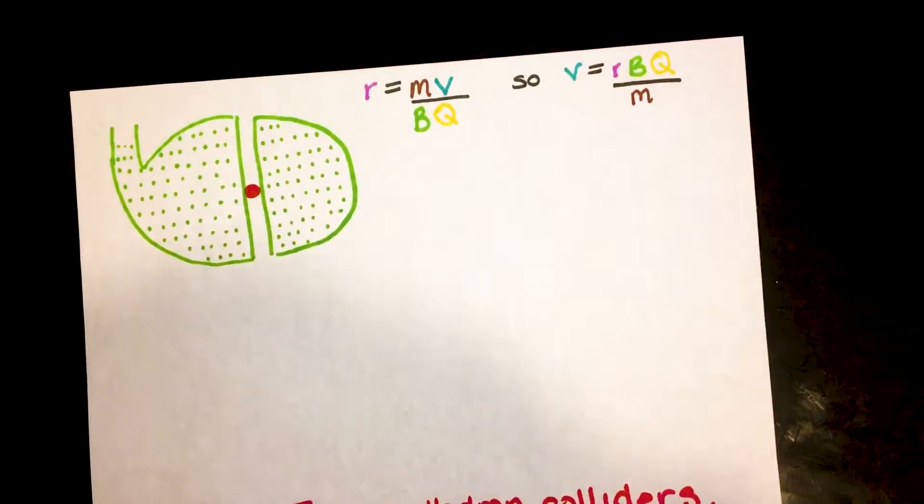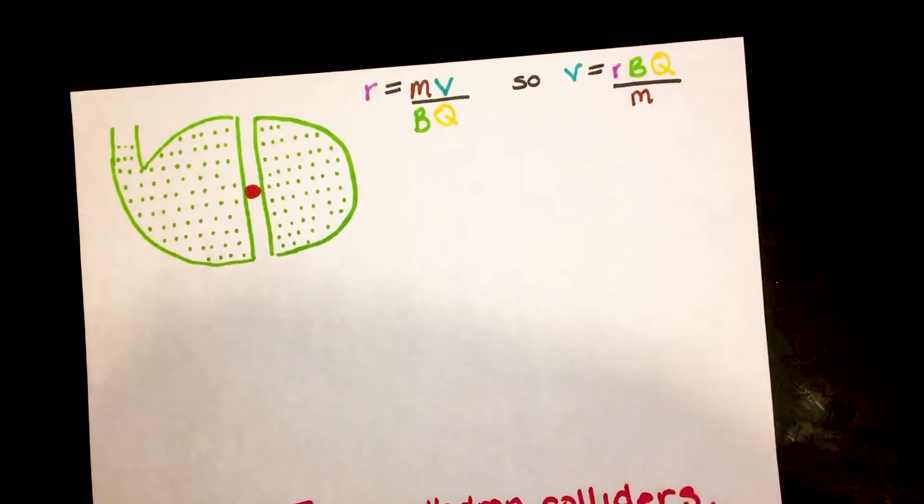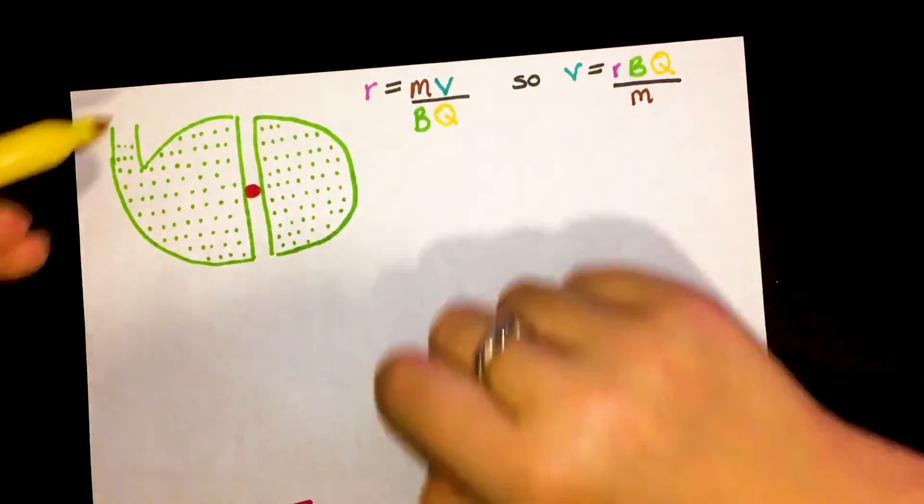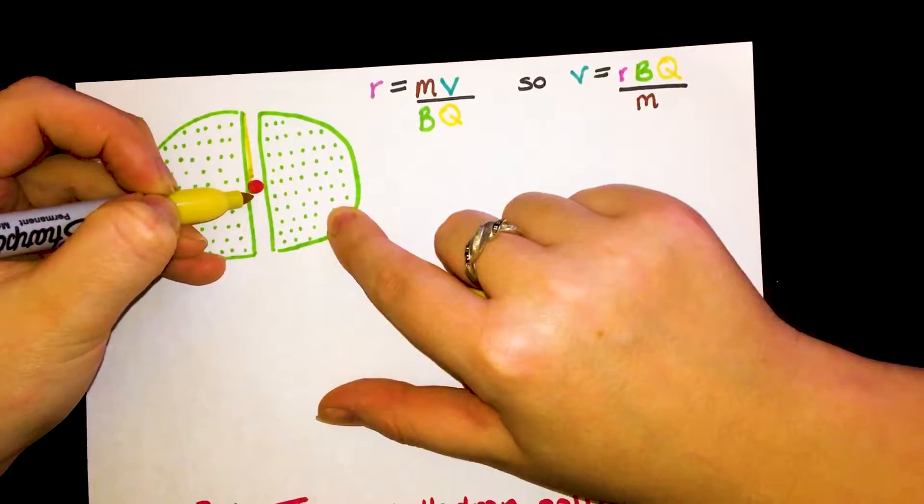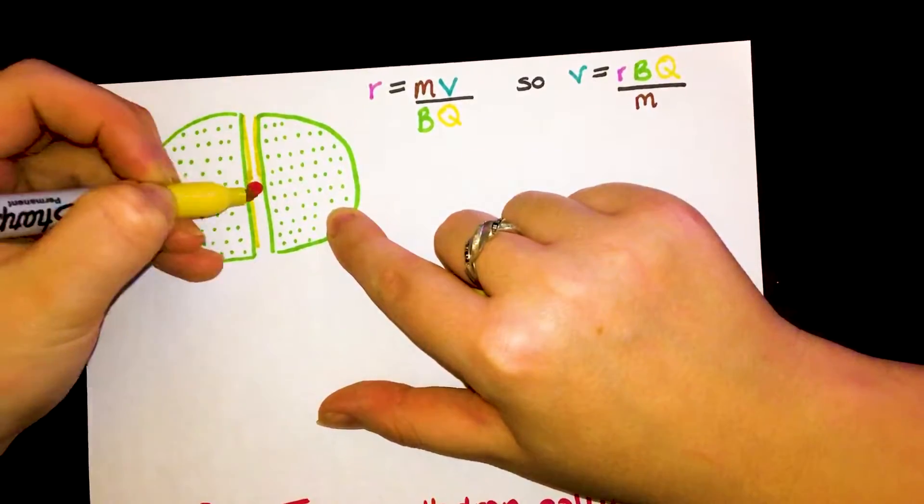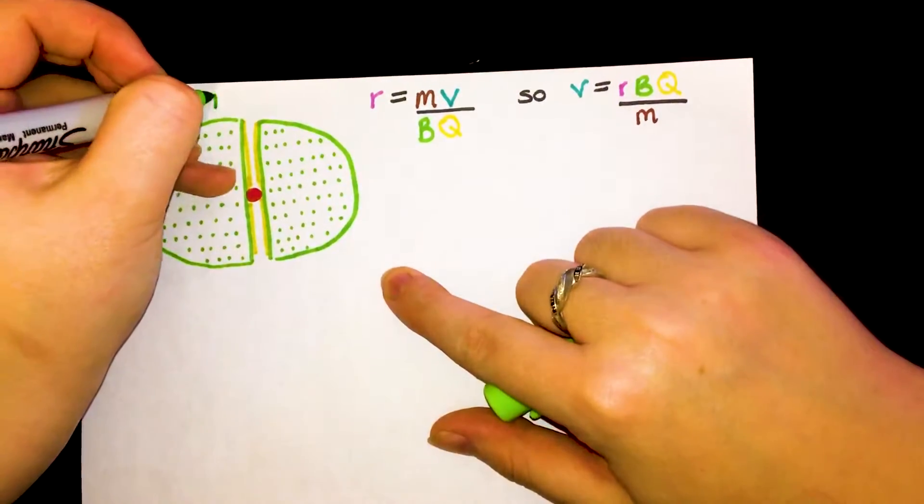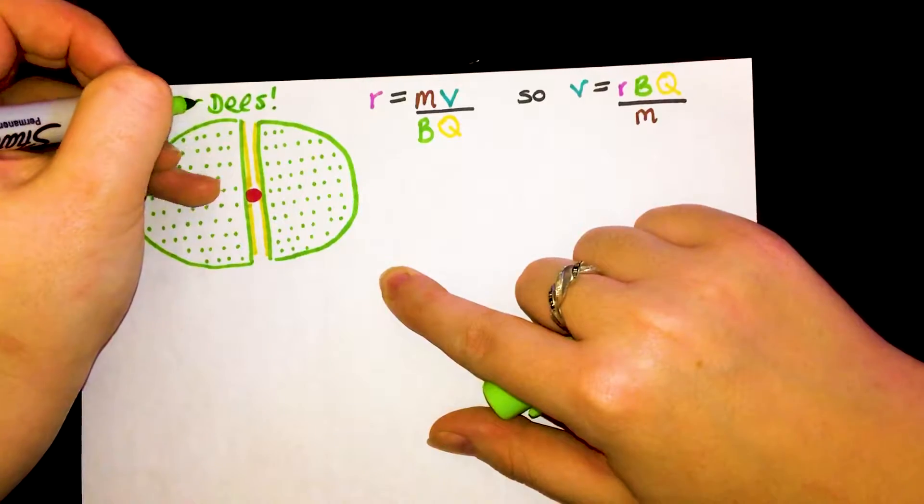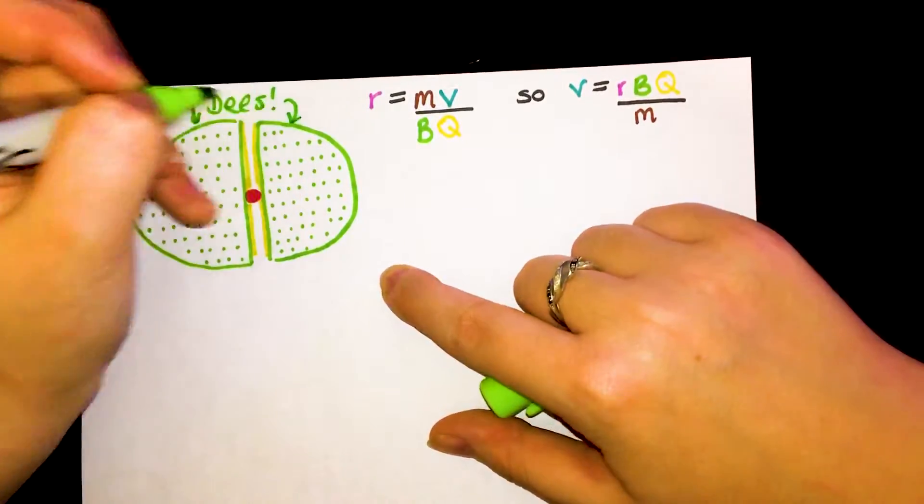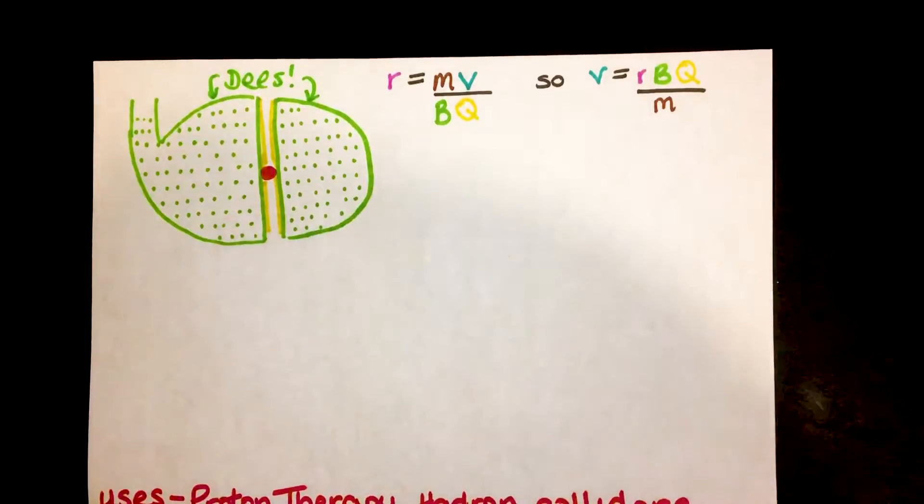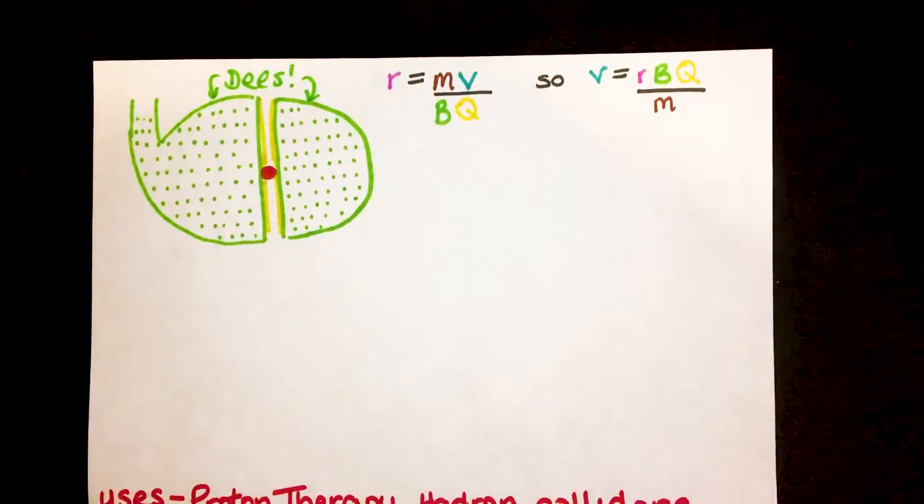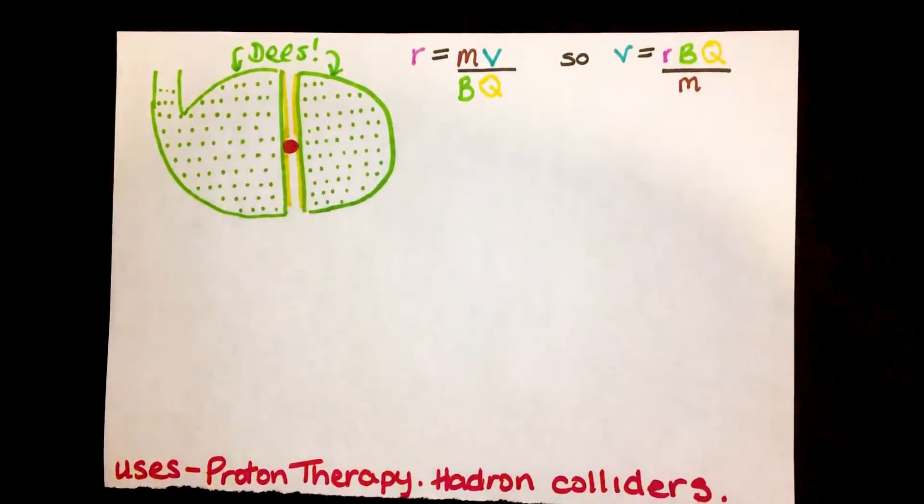Now the main thing we have to think about here is if we can't use a magnetic field, how on earth can we speed up a particle? So the best way to do it is to use electric fields. So what we first have to do is we charge this gap. So we have a gap in what we call our D's. So these guys are the D's, a super original name by scientists yet again, and this red thing in the middle is our source, so that's where we're getting our protons from.